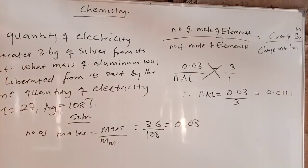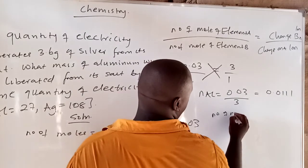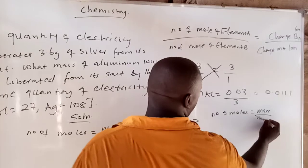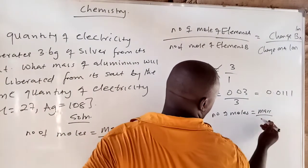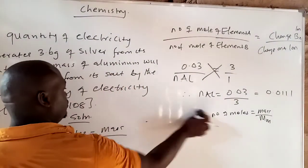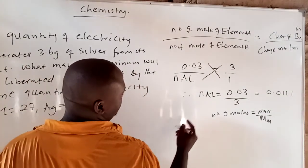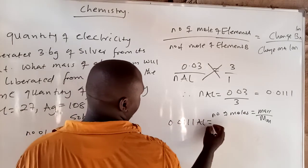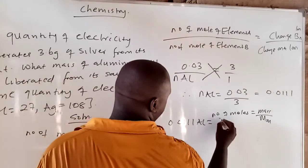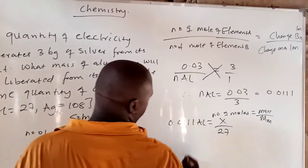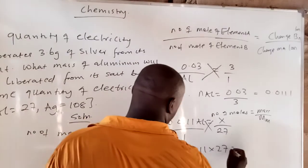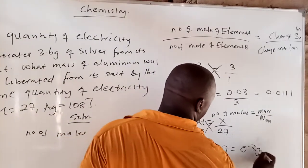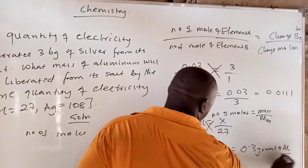Now that we have 0.0111 moles of aluminium, remember they wanted the mass of aluminium. Using number of moles equals mass over molar mass: 0.0111 moles of aluminium equals mass S divided by the molar mass of aluminium, which is 27. Cross-multiplying, the mass of aluminium is 0.0111 times 27, which gives 0.3 grams of aluminium. That is the answer.